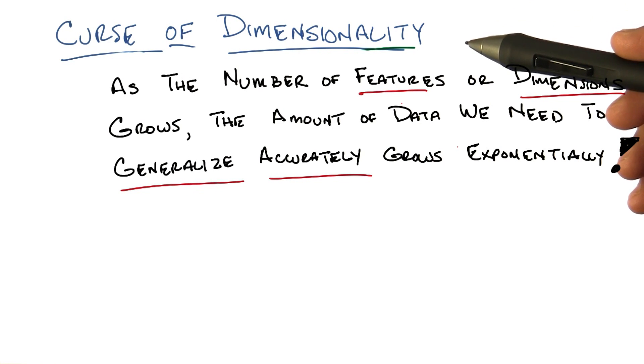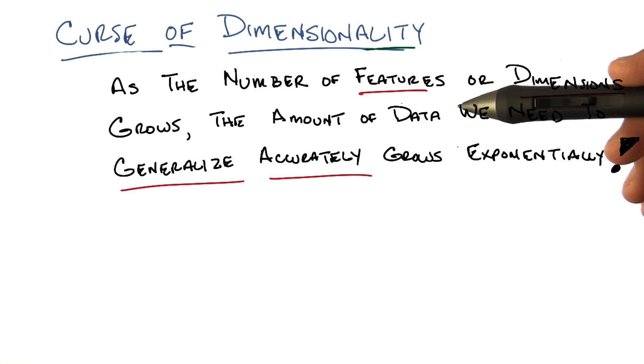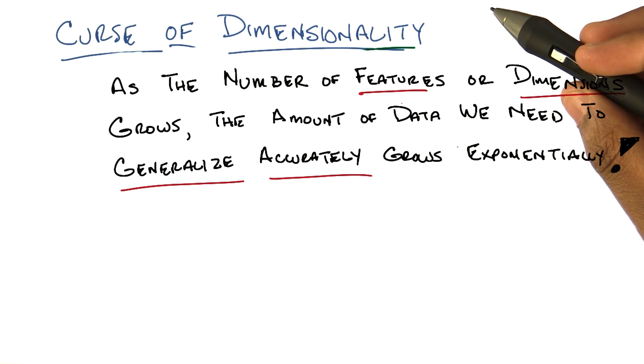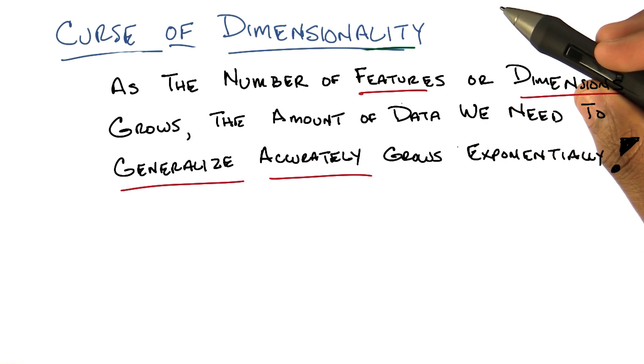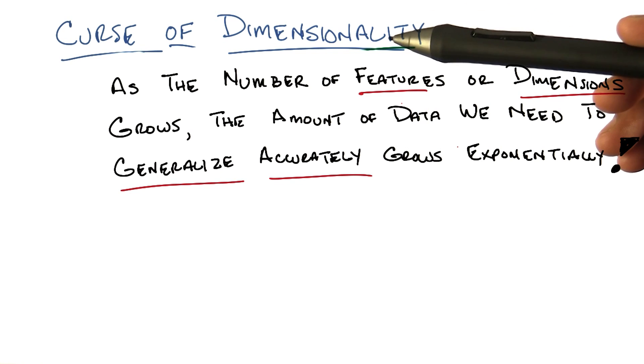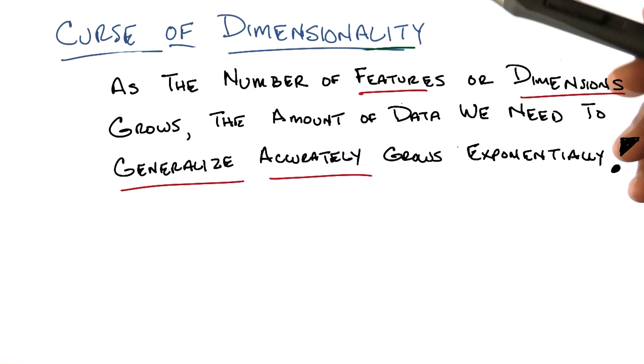Michael, so this notion of having different features or different dimensions throw us off has a name, and it's called the curse of dimensionality. Nice audio effect. I did like that audio effect in post-production. And it refers to a very particular thing. So let me just read out what it refers to.